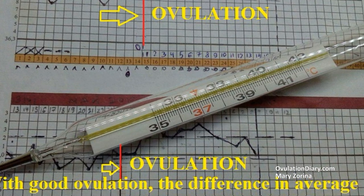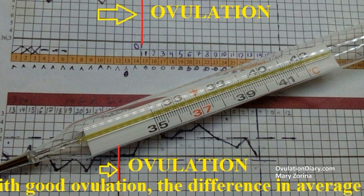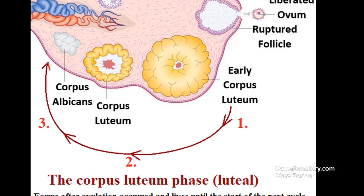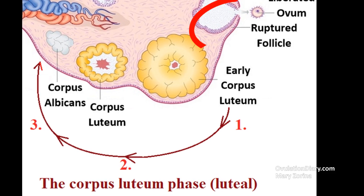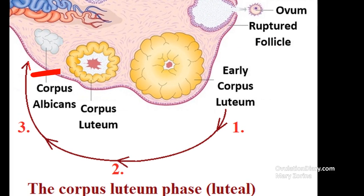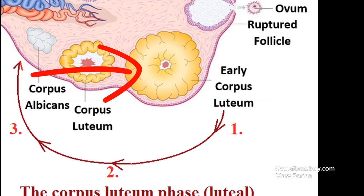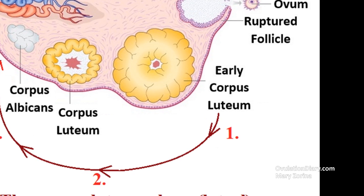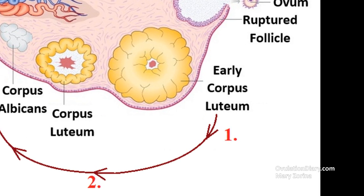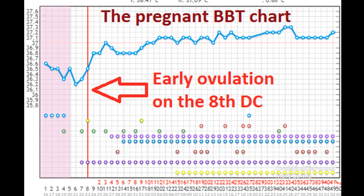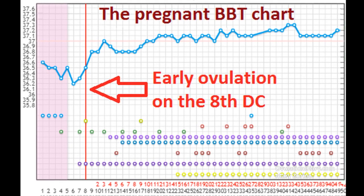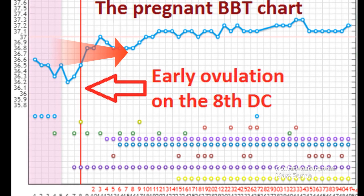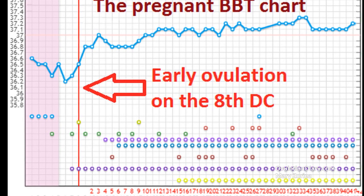Here is an example of the method of measuring basal body temperature. After rupture of the follicle — ovulation — a corpus luteum forms in its place, which begins the active production of progesterone. This hormone increases the average BBT by 0.3 to 0.5 degrees Celsius (0.54 to 0.9 degrees Fahrenheit). If you notice that the indicators go up above the usual norms of the first phase of the cycle, then the egg has already come out.